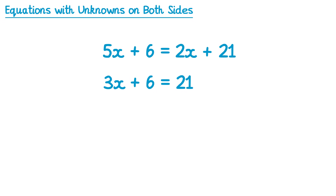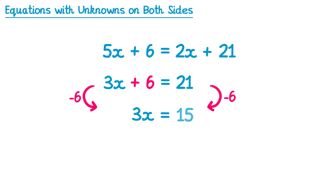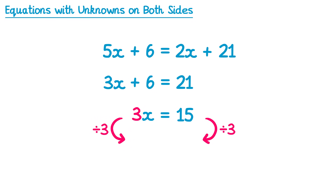What we've done here is turn this into a normal two-step equation, which you should already know how to solve. We need to deal with this plus 6 by subtracting 6 from both sides. On the left-hand side the 6s will cancel, so we have 3x, and on the right-hand side 21 subtract 6 is 15. Then finally, because of this 3, we divide both sides by 3. On the left-hand side, 3x divided by 3 is 1x, and on the right-hand side, 15 divided by 3 is 5. So the solution to this equation is x equals 5.